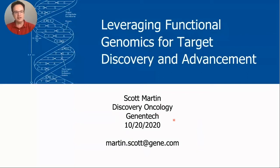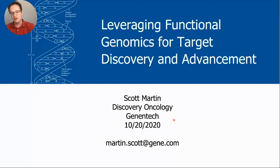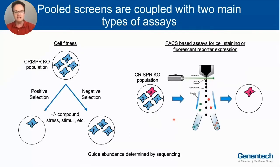Thanks for the introduction and invitation to speak. I'll provide an overview of applying functional genomics at Genentech, particularly with a focus on CRISPR-based functional genomics. We're using functional genomics throughout all of our therapeutic areas, from very early discovery and basic biology projects through applications in later stage programs. As Martin introduced, pooled CRISPR screens include fitness-based screens — where we implicate genes in fitness-related processes like compound sensitization or resistance through guide enrichment or depletion — and sorting-based screens, where we use a reporter protein or staining to sort a cell population of interest and look for enriched or depleted guides.